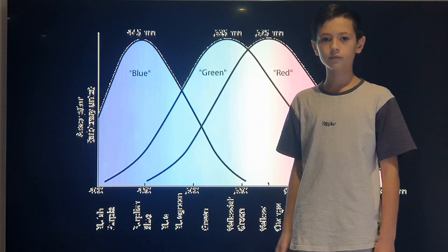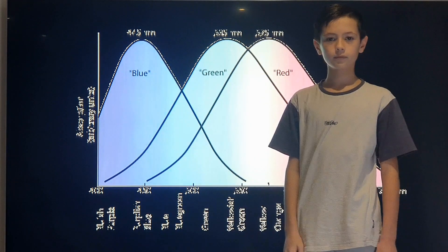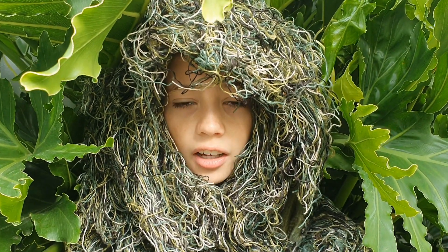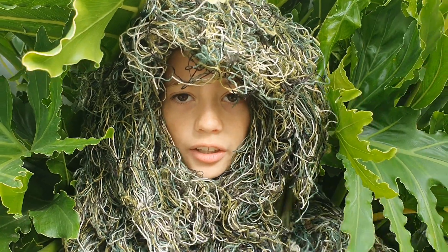And with so many cones that are picking up greenish wavelength, our brains will pick up lots of shades of green. This means we can detect a wider range of green shades than any other colour. Isn't it fascinating how evolution has shaped our ability to see the world around us?